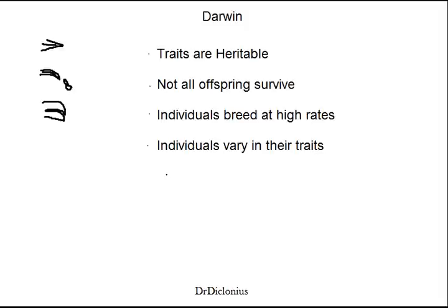The fourth observation he had is that individuals vary in their traits, meaning that all individuals differ in some way or another from each other. What he inferred from these four observations was that individuals with more favorable traits for their environment tended to reproduce and survive at higher rates than those that did not. These favorable traits tended to accumulate over generations and over periods of time.